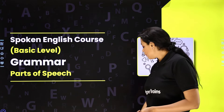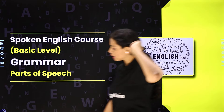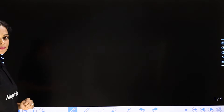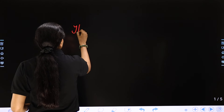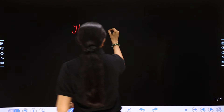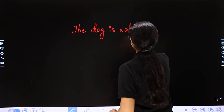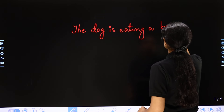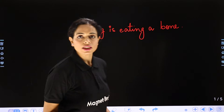So in English, jo hamari parts of speech hain — matlab koi bhi sentence, I will start by giving you an example. Here I have written: 'The dog is eating a bowl.' The dog is eating a bowl.